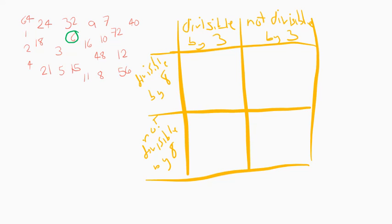6 is divisible by 3, but it's not divisible by 8. So we're going to put it here because it's divisible by 3, but it's not divisible by 8. So that's where it's going to go.